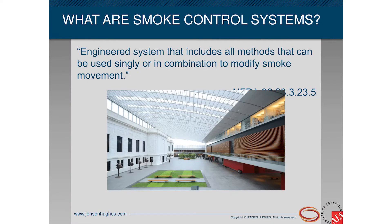So, smoke control — what is it exactly? It's an engineering system that includes all methods, singly or in combination, that modify smoke movement. Basically, you can boil smoke control down to tenability — whether it's going to be maintained indefinitely or for a set amount of time in one smoke zone or besides the zone of origin of the fire. We'll define tenability a little bit later.